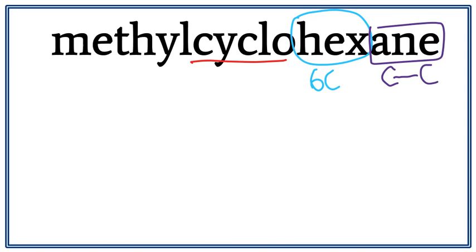We're going to draw a hexagon. This is cyclohexane - six carbons arranged in a ring.